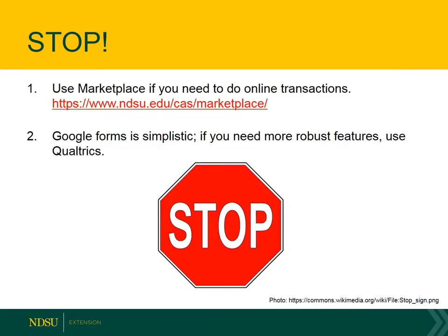Just as I'm getting started, I'm going to tell you to stop. In the instance that you need to collect money through your Google Form — maybe you're having an event and there's a cost for it — you'll have to use the Marketplace app for that, because Google Forms does not have the functionality or security to collect financial information. Also, Google Forms is very simplistic. There's a limited number of question types you can use, and other form tools such as Qualtrics are a lot more robust.